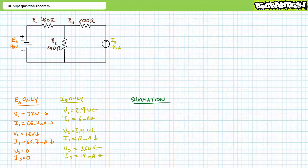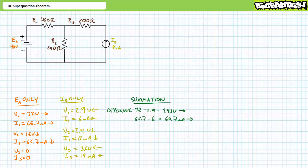Now that we've completed independent analysis from the perspective of both sources, the only task remaining is to summate the effects accounting for magnitude, polarity, and direction. The voltage source induces a 32 volt drop positive to negative left to right across R1, while the current source induces a 2.9 volt drop positive to negative right to left across the same resistor. When superimposed, R1 ultimately experiences a 29.1 volt differential positive to negative left to right — the sources oppose each other, so the final voltage is less. Similarly, 66.7 milliamps left to right minus 6 milliamps right to left gives R1 ultimately experiencing 60.7 milliamps left to right.